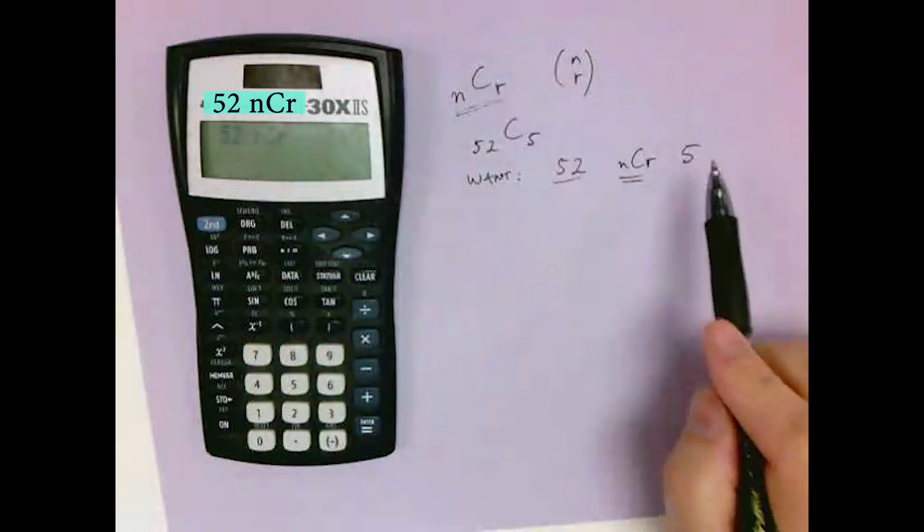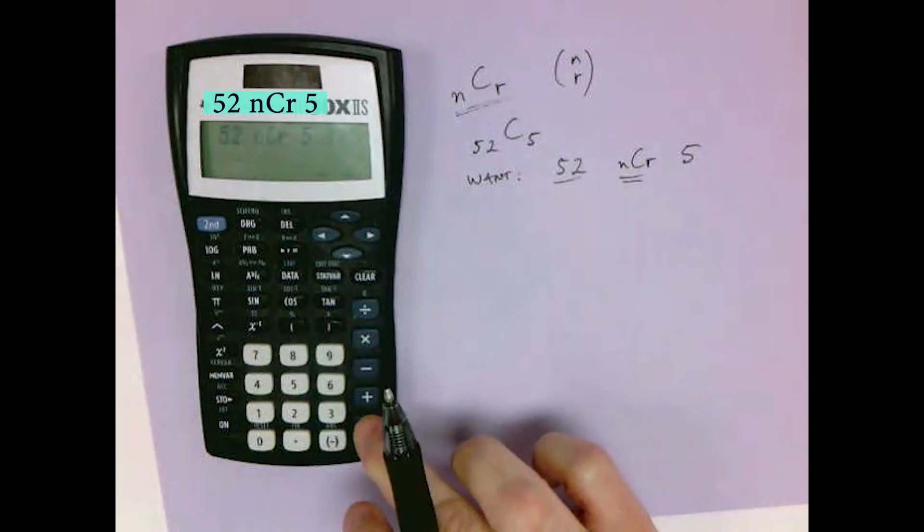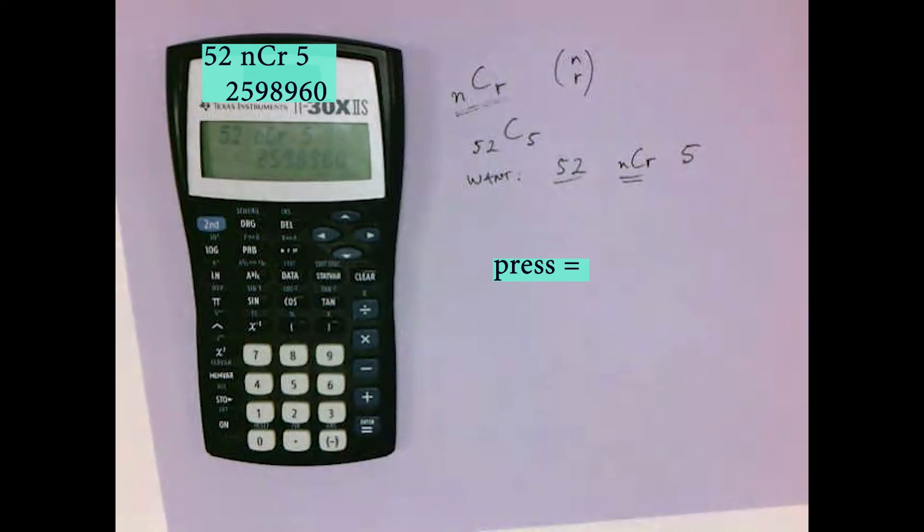We need the 5, so we press 5. We have our 52 NCR 5. Press equal. The answer is 2,598,960.